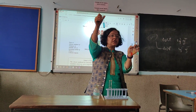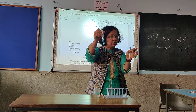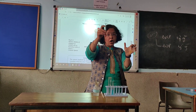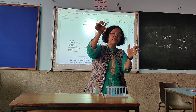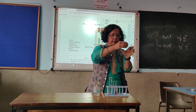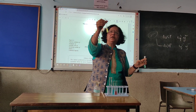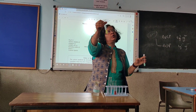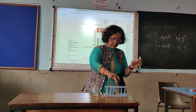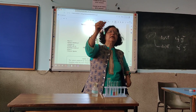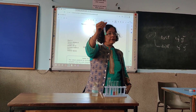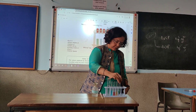Copper 2+ has a D9 configuration, that's why it shows colour. Cobalt 2+ has a D7, that's why colour. Iron 2+ has a D6, that's why colour. And nickel 2+ has a D8, that's why colour.